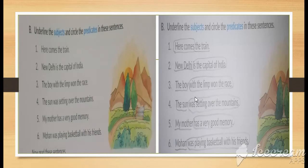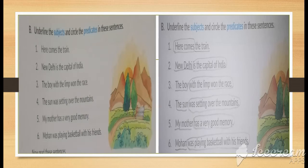Here: 'The boy with the limp won the race.' Limp means langda. So 'the boy' is the subject and 'with the limp won the race' is the predicate — that part of the sentence telling us something about the subject.